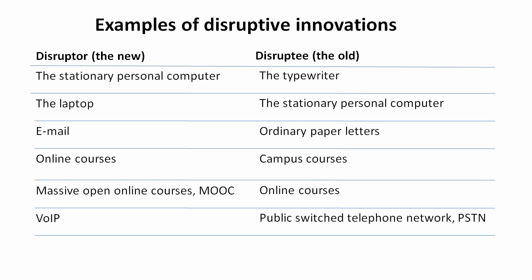Now, all these disruptors have one thing in common. They have interfered with an old product or service, so that something new has become accessible to the masses. In other words, through a disruptive process, a larger part of the population got access to new and better technical solutions and innovative services.